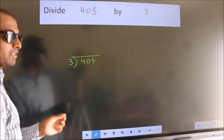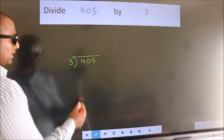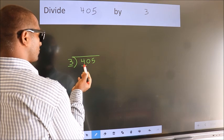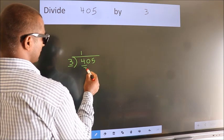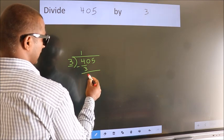This is your step 1. Next, here we have 4, here 3. A number close to 4 in 3 table is 3 1s 3. Now, we should subtract. We get 1.